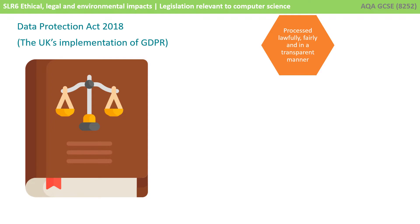The Data Protection Act 2018 is an updated piece of UK legislation which is designed to protect an individual's personal data. Prior to 2018 it already provided a great deal of protection to UK citizens, but it has since been updated and made even more robust by fully implementing all of the general data protection regulations set down by the European Union. It provides various rights and guarantees under law, and these are known as its basic principles.